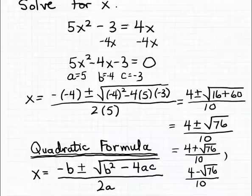So there are the two solutions to our quadratic equation. One solution is four plus the square root of 76, divided by 10. The second solution is four minus the square root of 76, divided by 10. You may also want to use a calculator to get a decimal estimate for these two solutions.